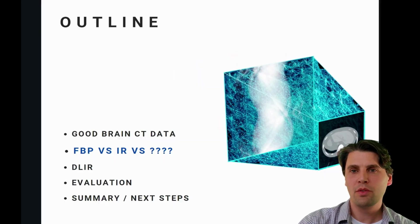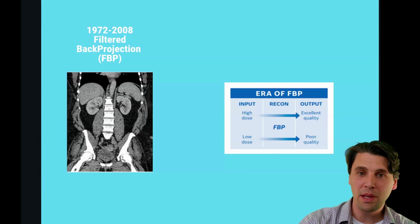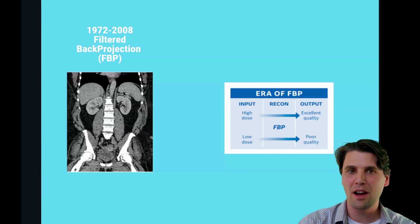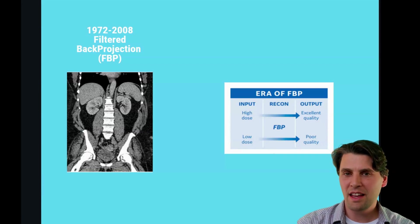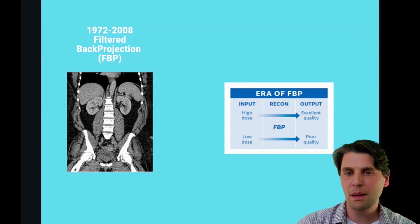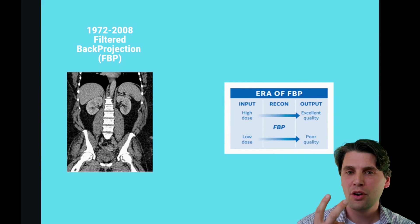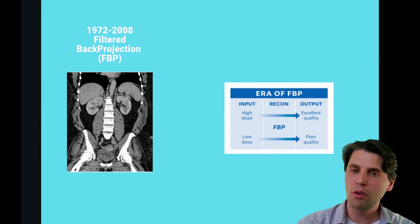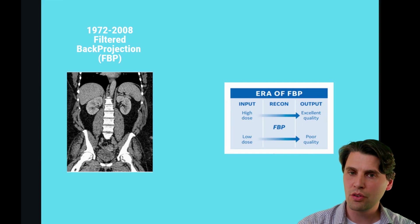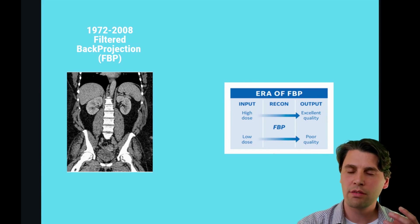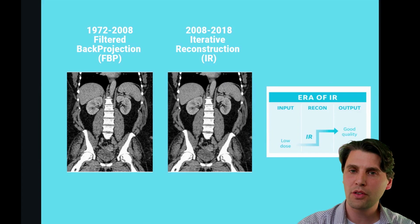Next in the outline, we'll talk about FBP versus iterative reconstruction versus some unknown that's going to be coming. Filtered back projection — this is GE's history, but it's similar throughout the industry. In the early 1970s, filtered back projection became the standard because it's fast and gives good results if you have reasonable, relatively high dose data. If you don't have high dose data, filtered back projection does not have a way to inherently reduce noise other than to use a different filter kernel, which will smooth the image. So in the case of lower dose data, the results are not as good with filtered back projection.